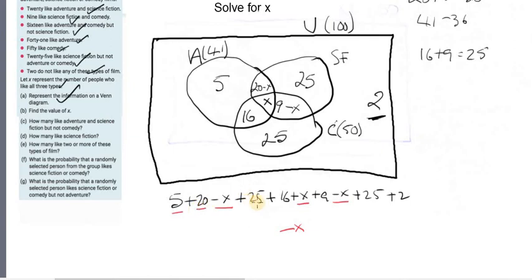So 5 and 20 is 25. I'll underline them to show that I've actually counted them. So 5 and 20 is 25, and 25 is 50, and 16 is 66, and 9 is 75, and 25 is 100, and 2 is 102. So 102, when I add up all the numbers, and my x is added up to minus x, when I add them up together, I have to get 100, because that's the size of the universe. So x is equal to 2. So you solved the first bit. x is equal to 2.